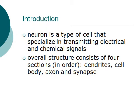What is a neuron? A neuron is a type of cell that specializes in transmitting electrical and chemical signals. A general neuron cell consists of four parts, in order: dendrites, cell body, axon, and synapse.